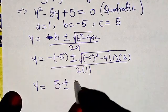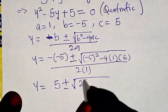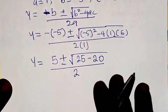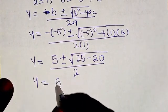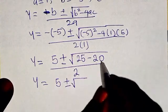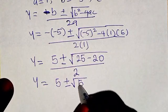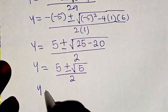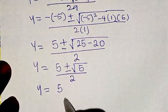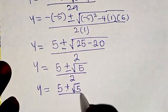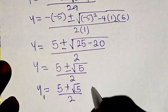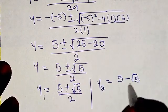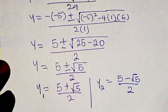This simplifies to y equals 5 plus or minus the square root of 25 minus 20, over 2. So y equals 5 plus or minus the square root of 5, over 2. Taking the positive value first, y1 equals 5 plus root 5 over 2, and y2 equals 5 minus root 5 over 2.